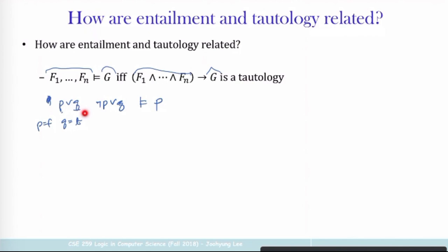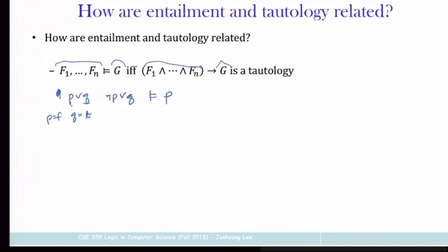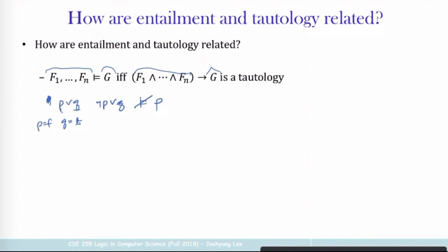So when you apply this interpretation — P is false, Q is true — these two formulas are true under this interpretation. But if you look at the right-hand side, P is actually false under this interpretation. So the entailment does not hold. Meaning that (P∨Q) ∧ (¬P∨Q) → P is not a tautology.